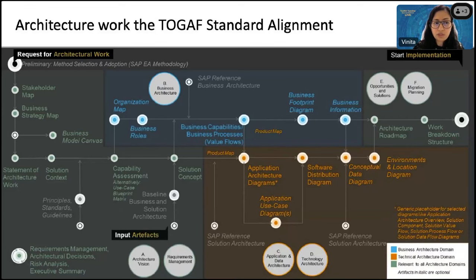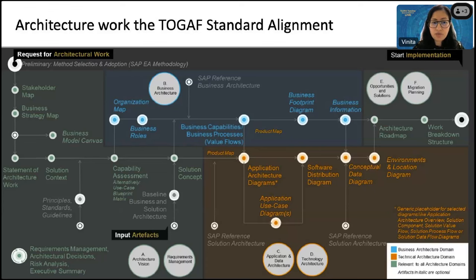The process starts with the request for architectural work. The white circles show the TOGAF standard and how it aligns where a customer requests an input artifact. We start with architecture vision or the requirements management phase on the TOGAF side, then move on to business architecture, application data architecture, and technology architecture. Finally, opportunities, solution, and migration planning lead to a formal architectural roadmap, giving us a work breakdown structure to target for implementation. A business blueprint document is prepared using TOGAF standards and greatly helps in alignment of SAP implementation as well as support projects.